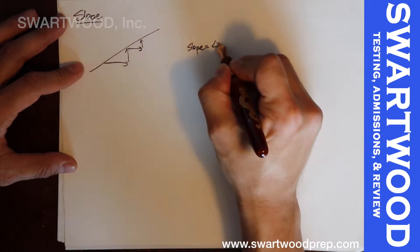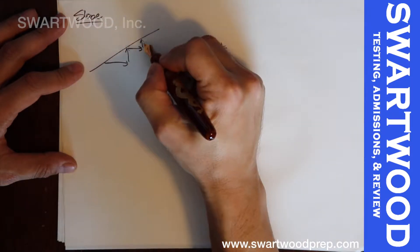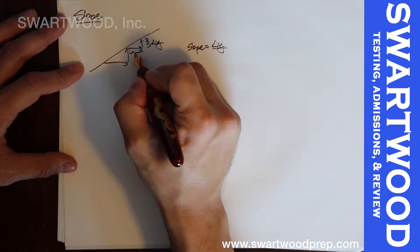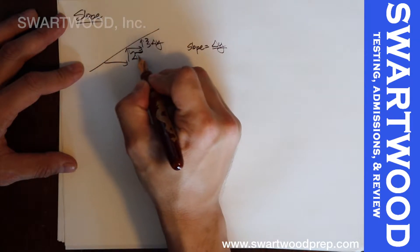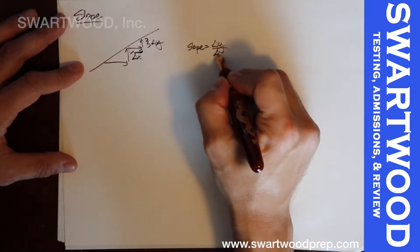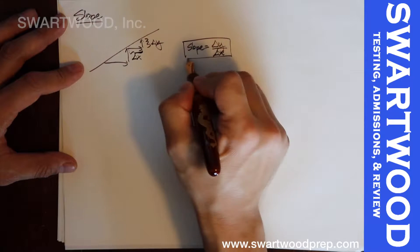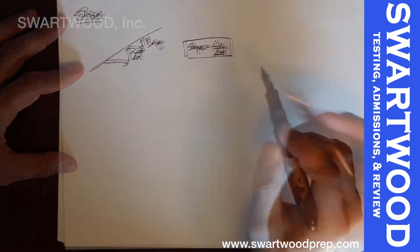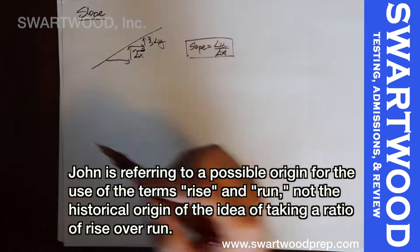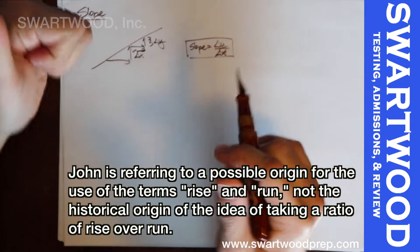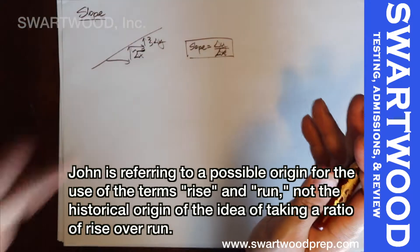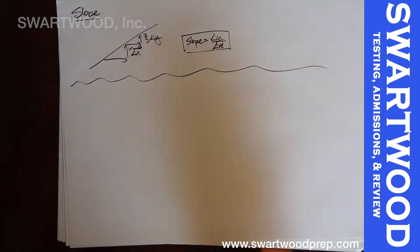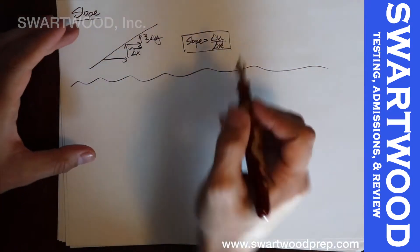Slope is a change in how much you go up versus how much you go over. Everybody learns this in school as rise over run — rise is how much you go up, run is how much you go over. That actually goes way back to when they used this stuff to aim cannons and fire off cannonballs off a ship, which is related to something called spherical geometry.